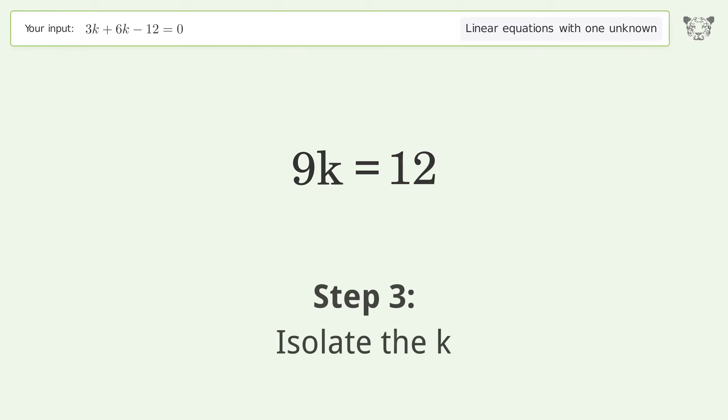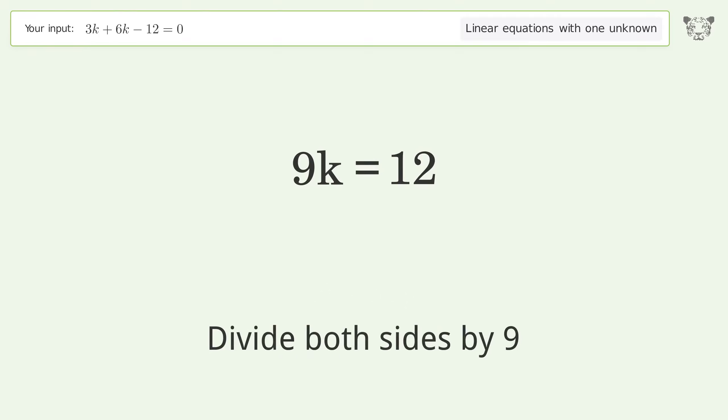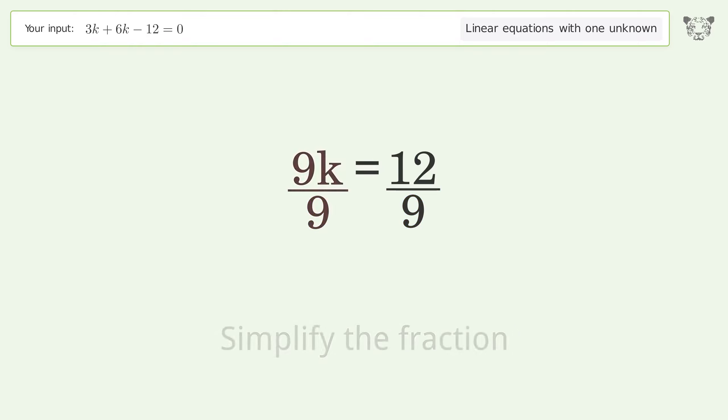Isolate k by dividing both sides by 9, then simplify the fraction.